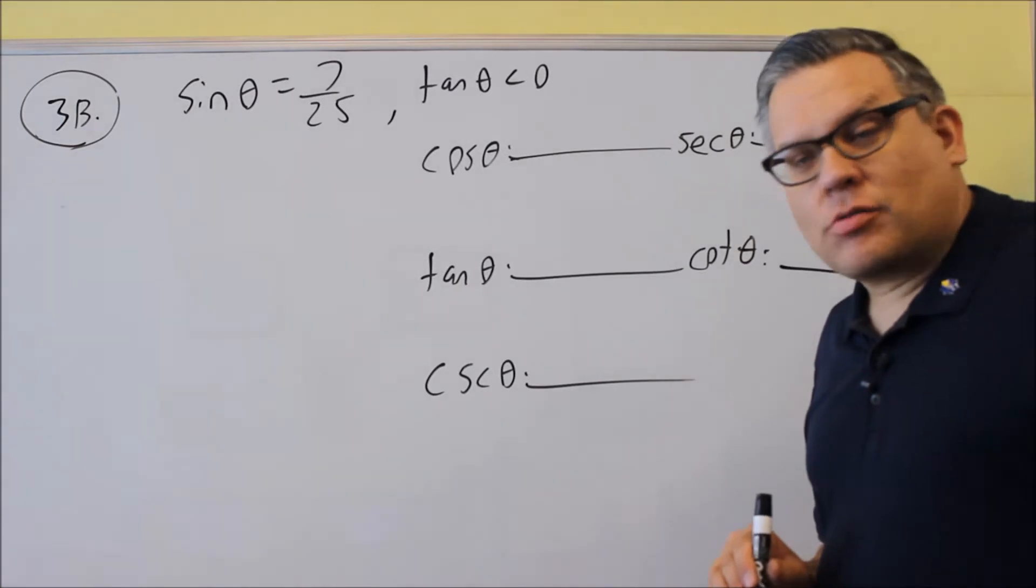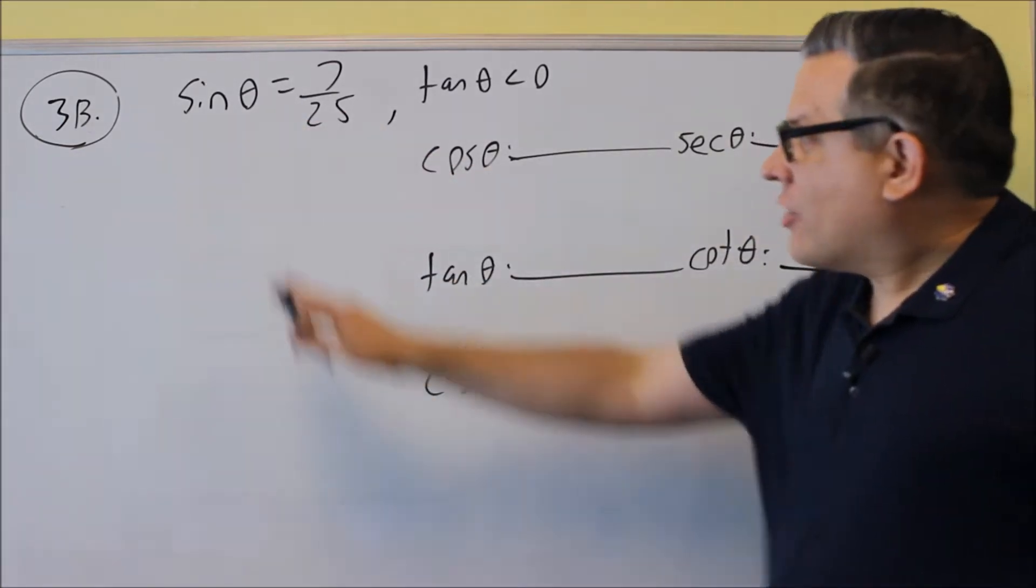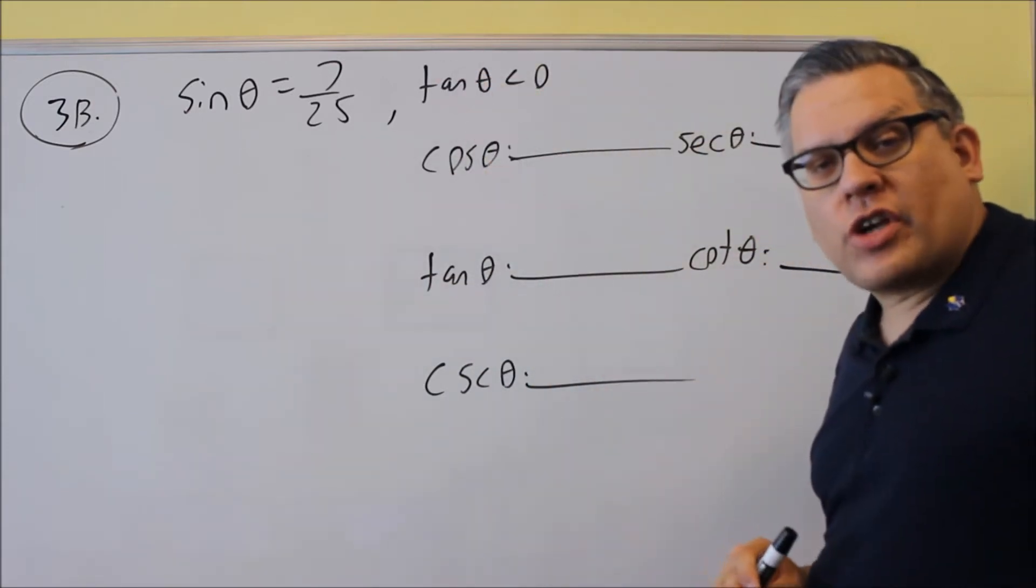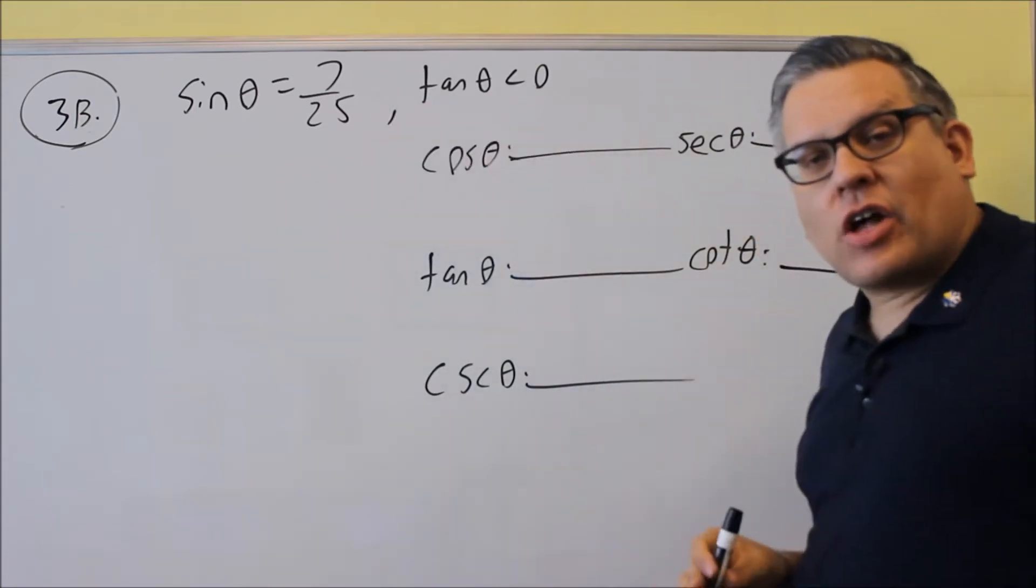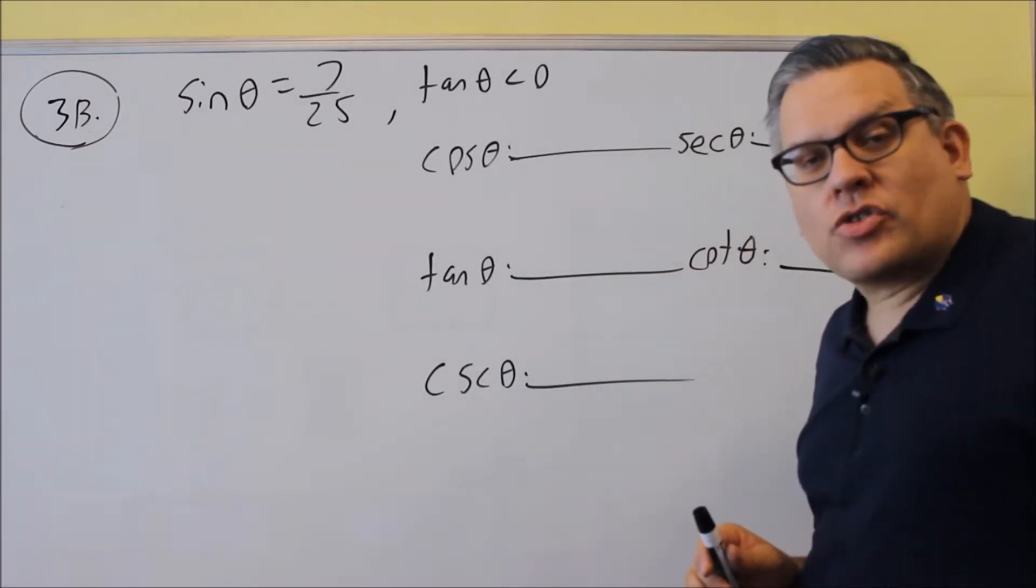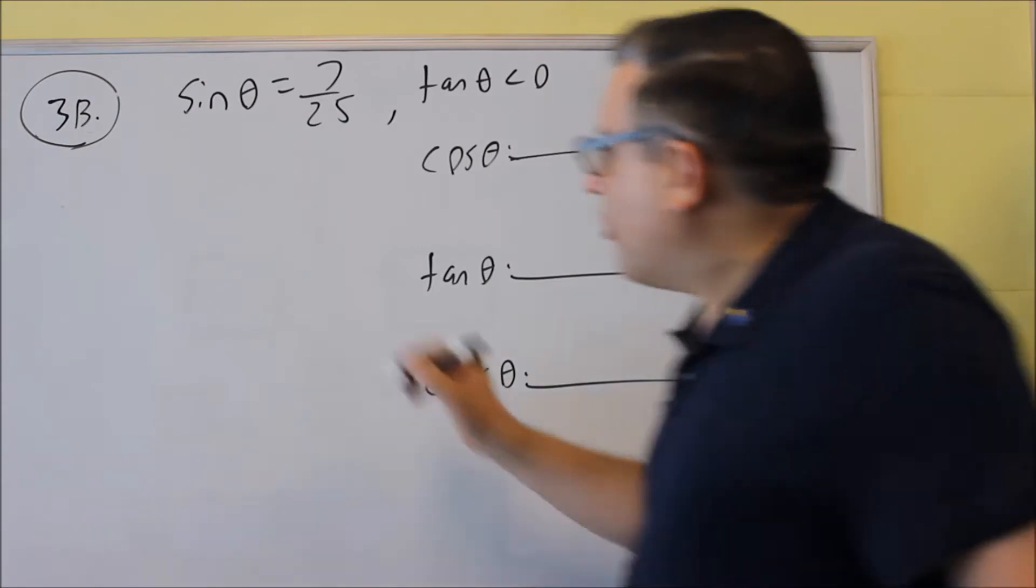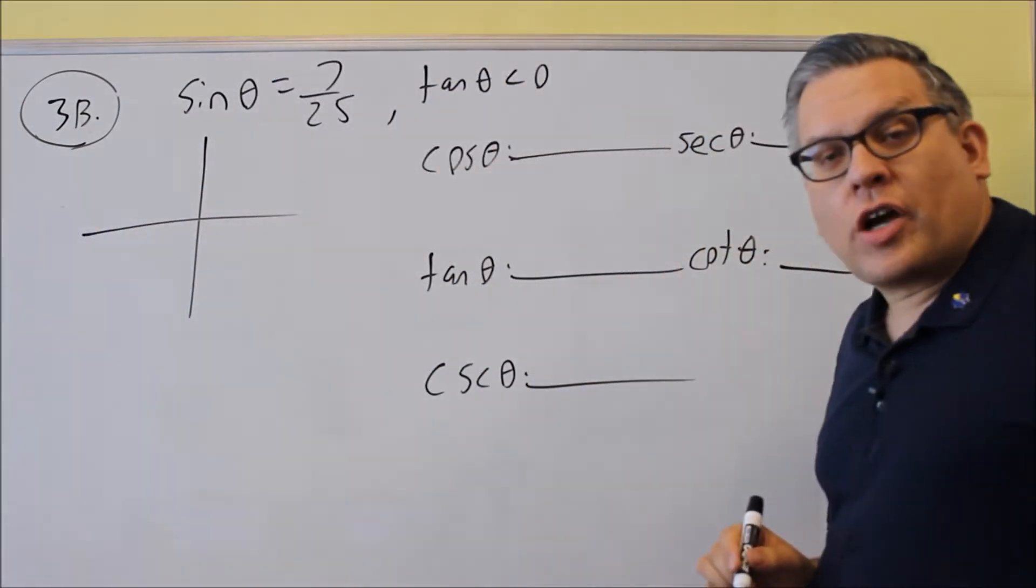So first thing we have to do is draw the triangle and we'll label it using the definition for sine. Now this one's different from A because in A they just went ahead and told you what quadrant you're in. However, this doesn't tell you that. We have to get that information based on the information provided and we have to use our all students take calculus sine chart for that one.